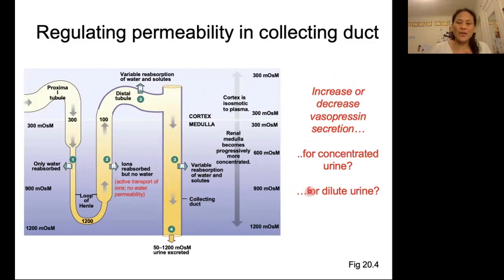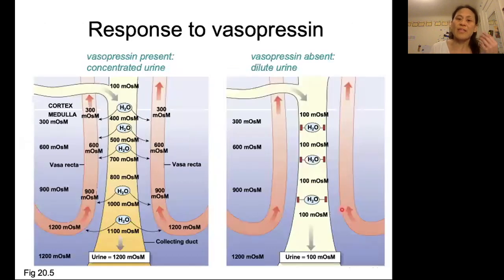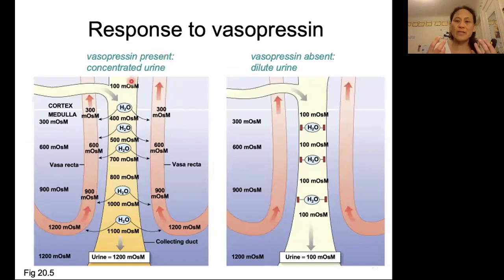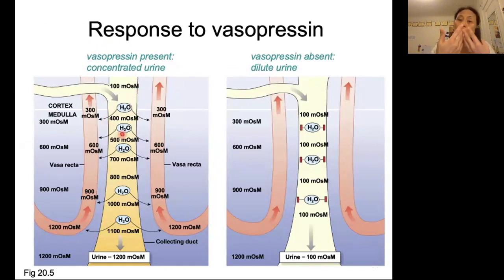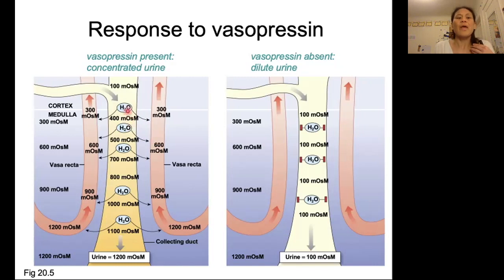For concentrated urine, you're going to want to increase your vasopressin secretion. For dilute urine, you're going to want to decrease vasopressin secretion. That is illustrated in this figure here. If we have vasopressin present, that is going to insert those water pores into the walls of the collecting duct, allowing water to leave the tubule and be reabsorbed back into the body. As a result, our urine is going to get more and more concentrated as it goes down the collecting duct.